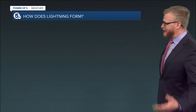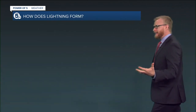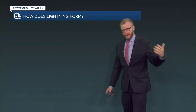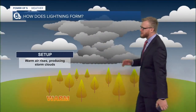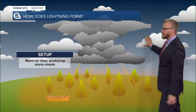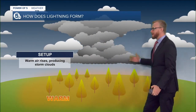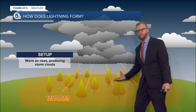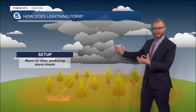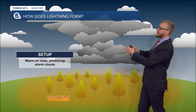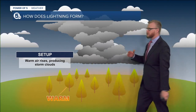Lightning — let's talk about it. You've got to have lightning to have thunder in a thunderstorm, so let's talk about how it forms. In a typical thunderstorm setup, you've got that warm air rising, and as that warm air rises, it develops into these thunderstorms.